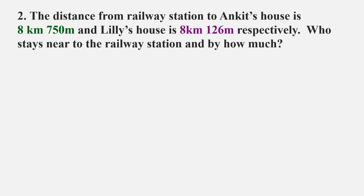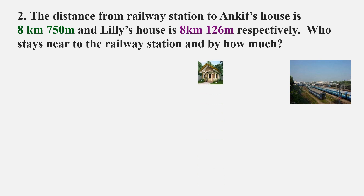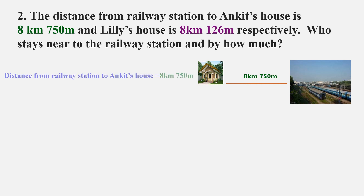Let's check the next question. The distance from the railway station to Ankit's house is 8 kilometers 750 meters. We will write the first step: distance from railway station to Ankit's house is equal to 8 kilometers 750 meters.